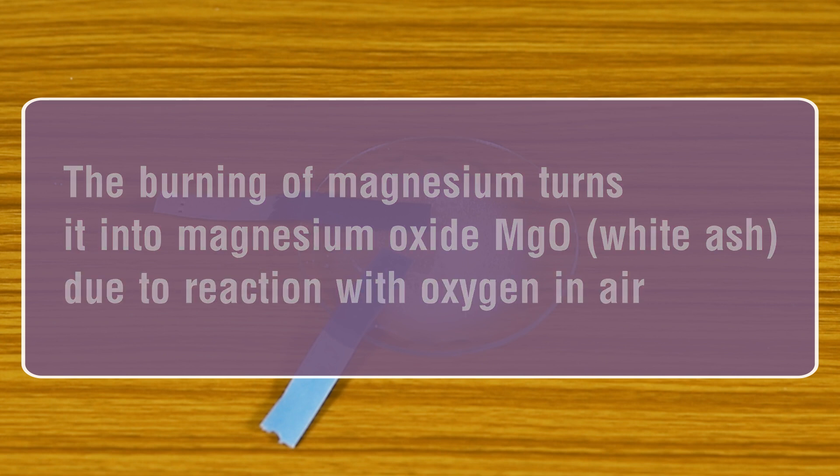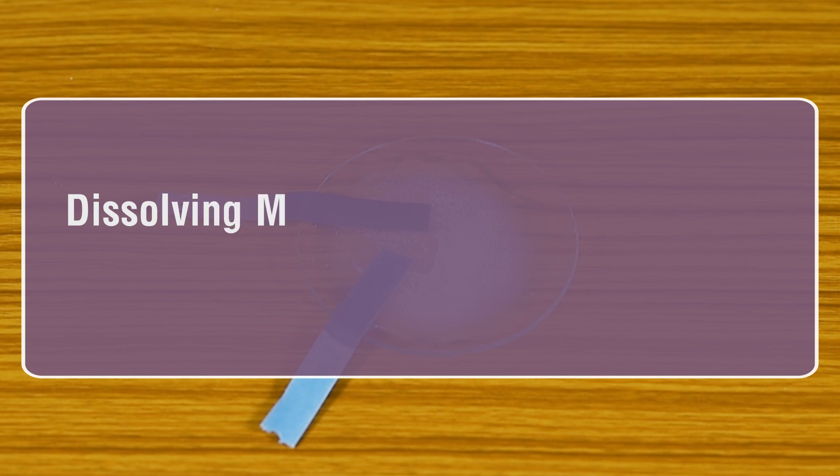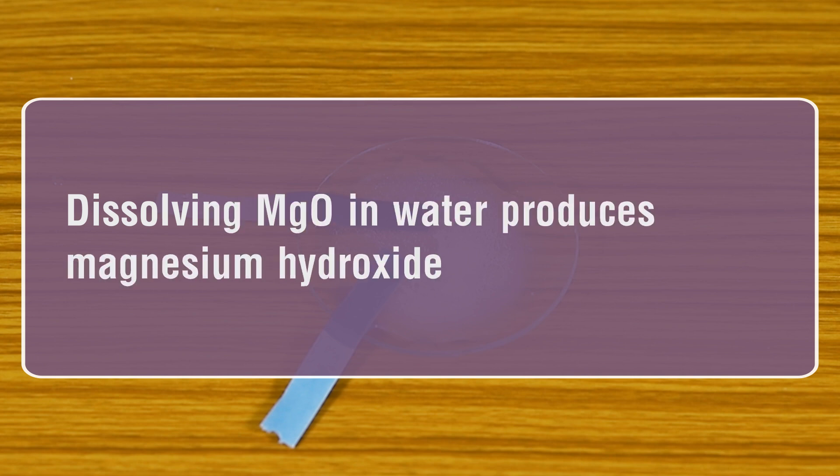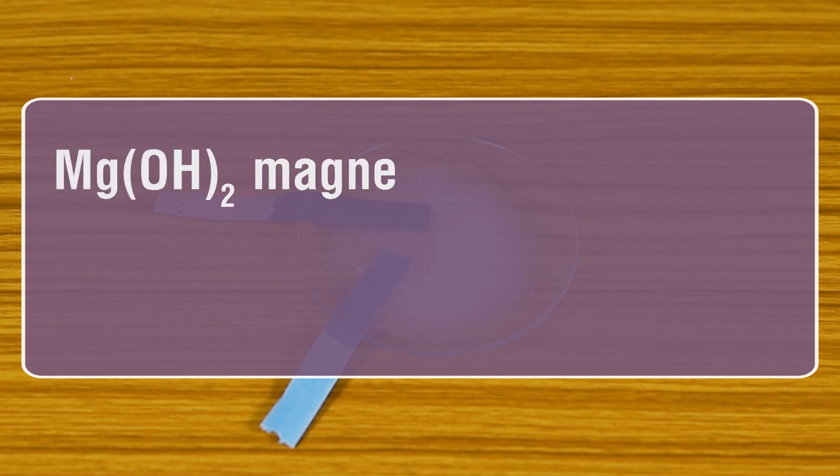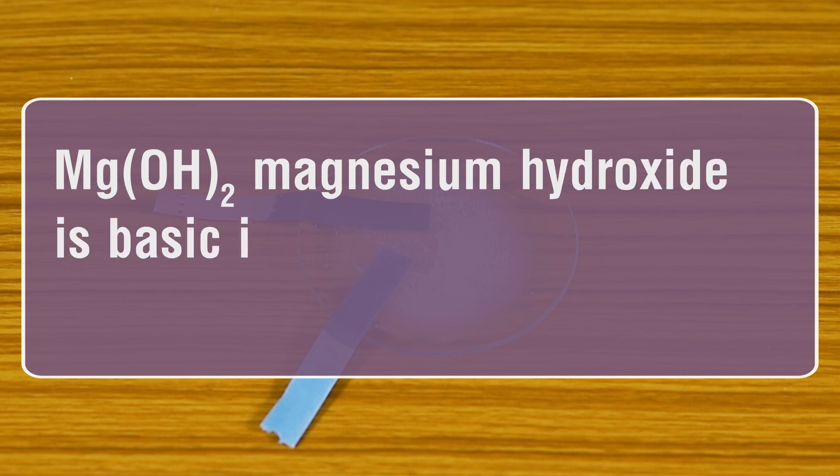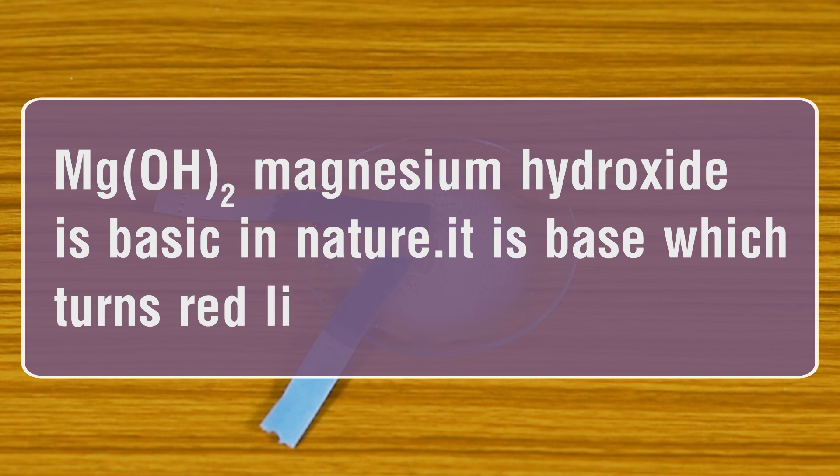Dissolving MgO in water produces magnesium hydroxide: MgO + H2O → Mg(OH)2. Magnesium hydroxide (Mg(OH)2) is basic in nature. It is a base which turns red litmus blue.